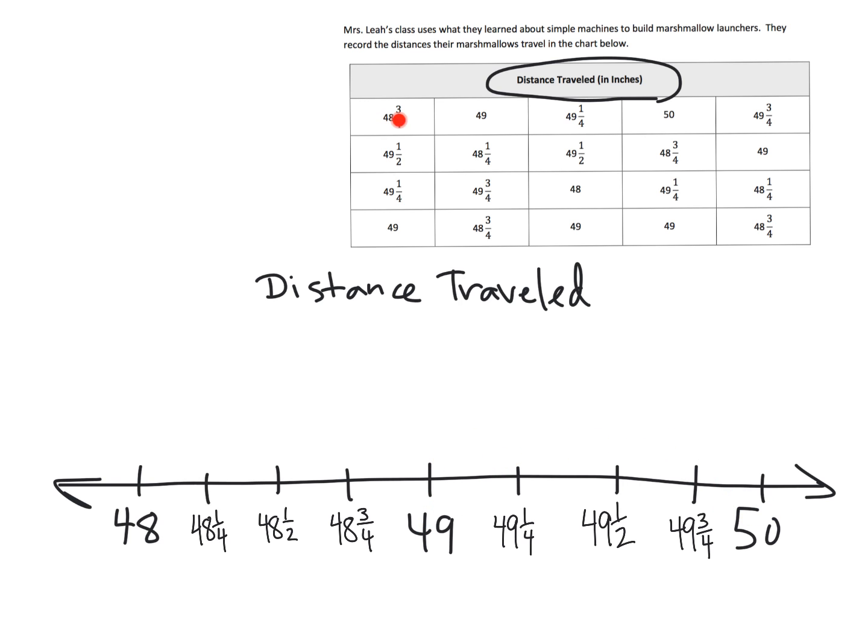So now what we're going to do is we're going to just look at the data and cross it off and put the X where it goes. So let's see, the first one, 48 and three quarters, is going to go right here. Cross that off. The next one is 49, that's going to go right here. The next one is 49 and a quarter, it's going to go right here. The next one is 50, it goes right here. The next one is 49 and three quarters, it's going to go right there.